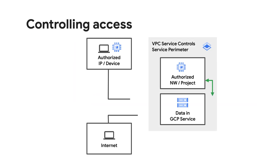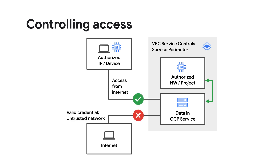However, sometimes there may be business needs for connections to cross perimeter boundaries. Ingress and egress rules will allow access across perimeter boundaries, allowing services in the perimeter to be accessed from outside the perimeter, and allowing resources within the perimeter to connect to services outside of it.